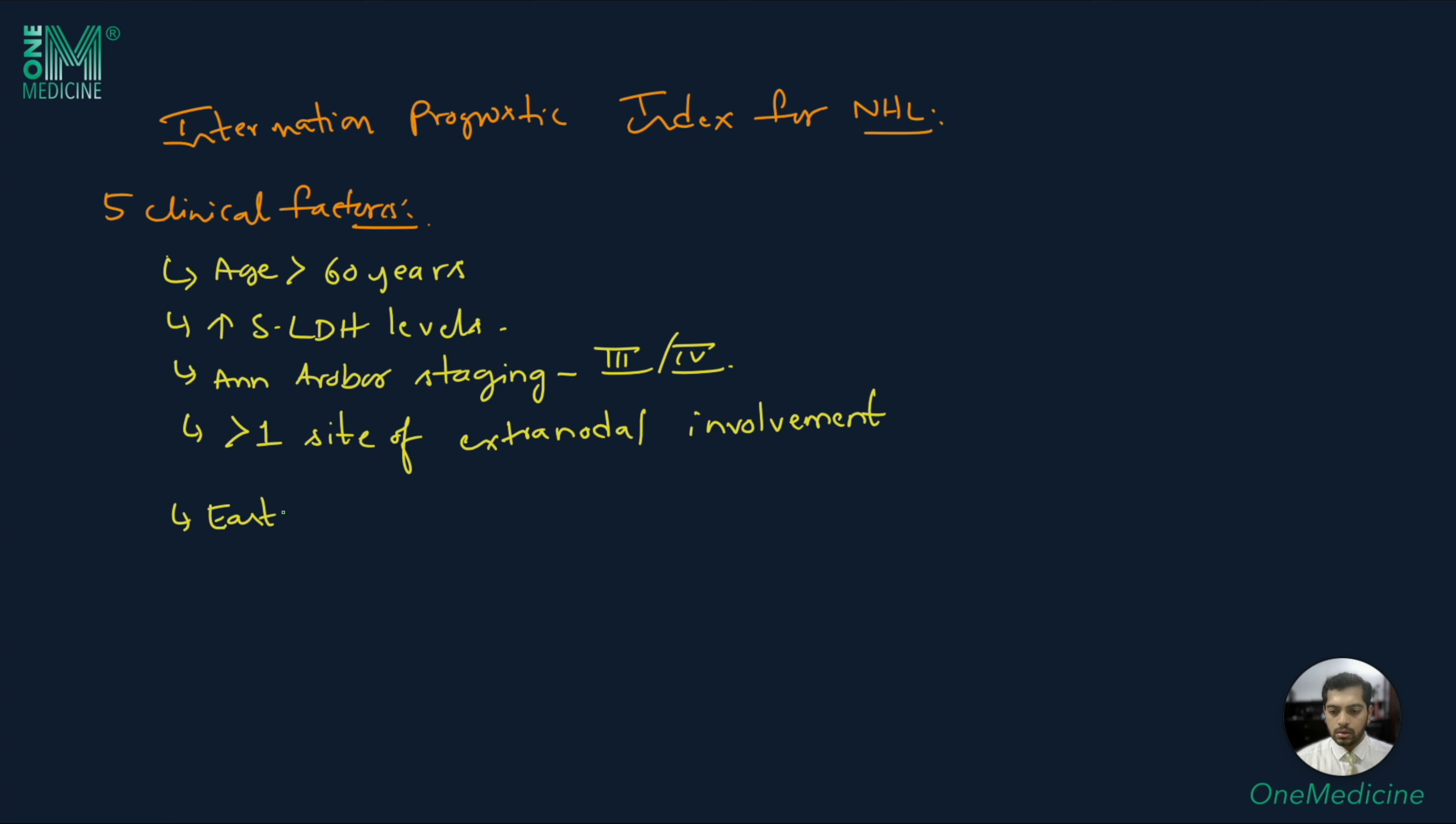There is an International Prognostic Index for non-Hodgkin's lymphoma. This includes 5 clinical factors to provide risk stratification. These include age more than 60 years, elevated serum lactate dehydrogenase levels, ARBOR staging of stage 3 or 4, more than one site of extranodal involvement, and Eastern Cooperative Oncology Group or ECOG performance status of more than or equal to 2.